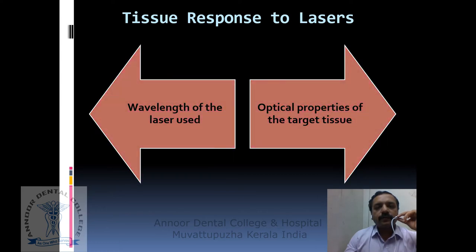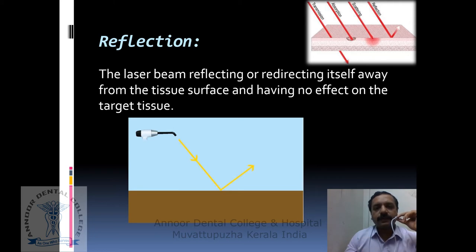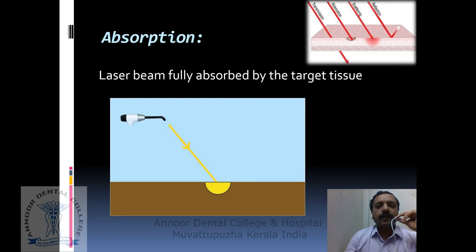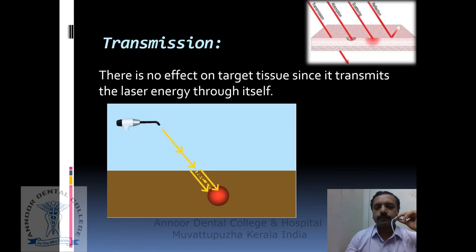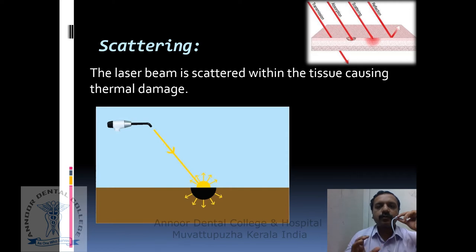Next we shall discuss tissue responses to laser. The light energy from a laser beam can have different interactions with the target tissue depending on two principal factors: the wavelength of the laser light and the optical properties of the target tissue. The first interaction is reflection — the laser beam reflects away from the tissue surface with no effect on the target tissue. The second is absorption — the laser beam is fully absorbed by the target tissue, producing maximum effect. Absorption depends on tissue characteristics such as water content and pigmentation, as well as laser parameters like wavelength and emission mode. Third is transmission — the target tissue allows the laser beam to pass through it entirely, so there is no effect. The final response is scattering — the laser beam is scattered within the tissue causing thermal damage, weakening the laser energy and producing no useful biological effect.